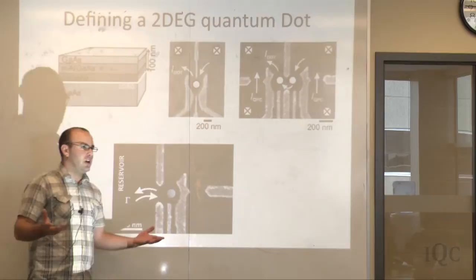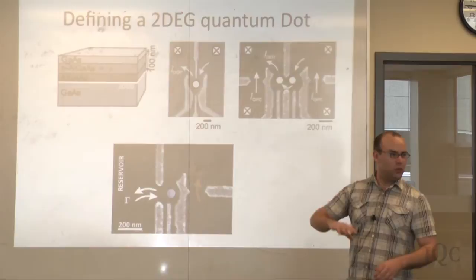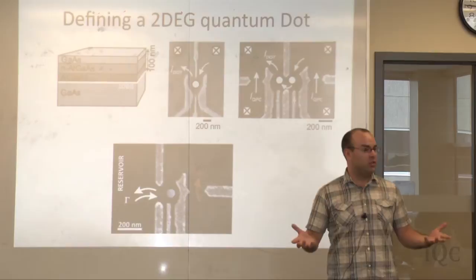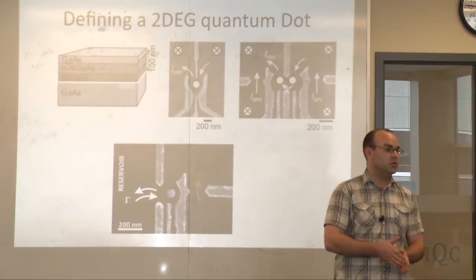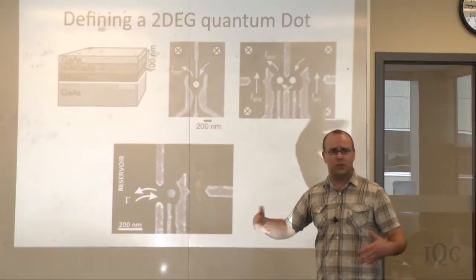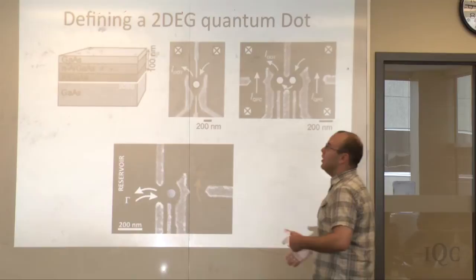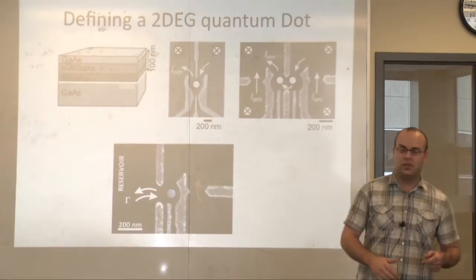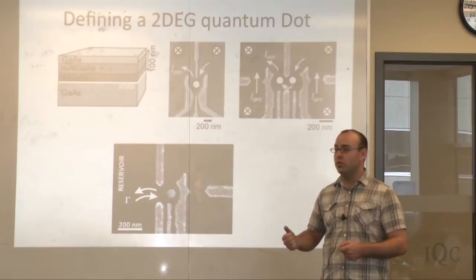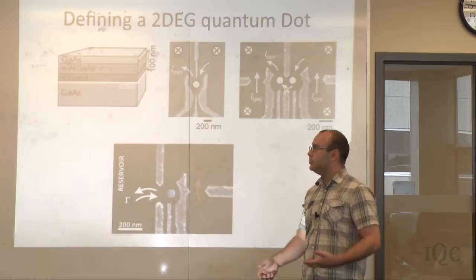First of all, everything is in three dimensions, at least at the level we're working at. We work in three dimensions, so we need to find a way to confine electrons to zero dimensions. We're going to use semiconductors — specifically a heterostructure of semiconductors. Let's use gallium arsenide, a semiconductor we've been studying forever, and some people already have one in their cell phone.